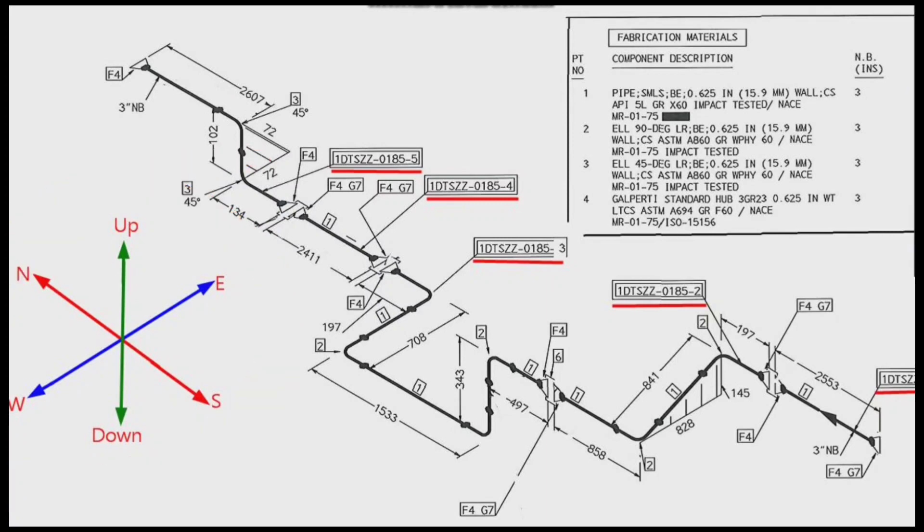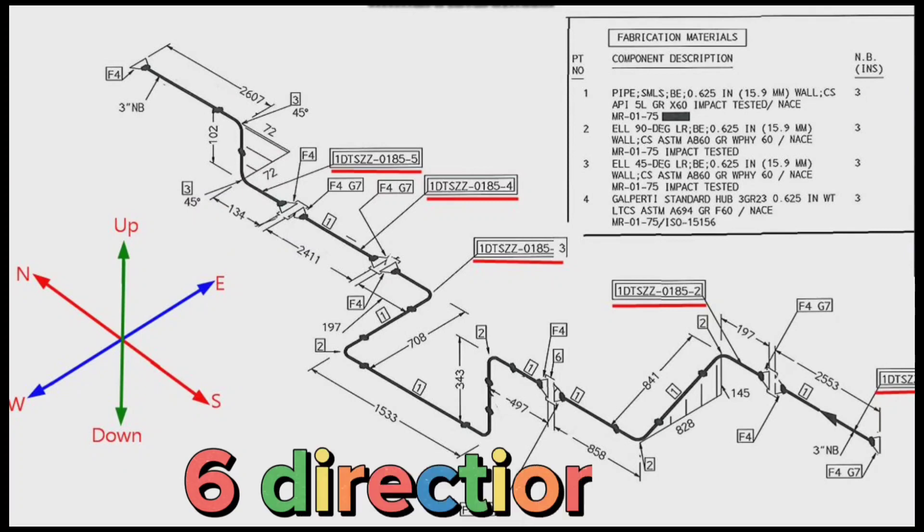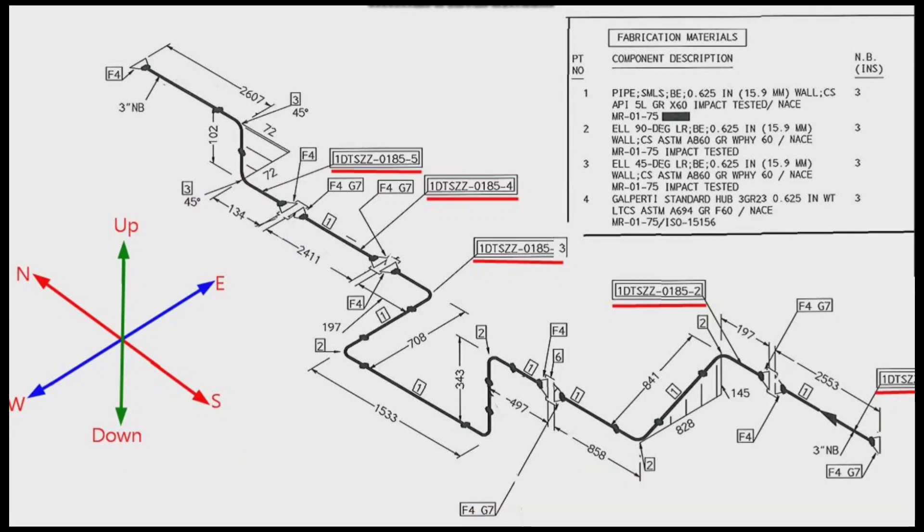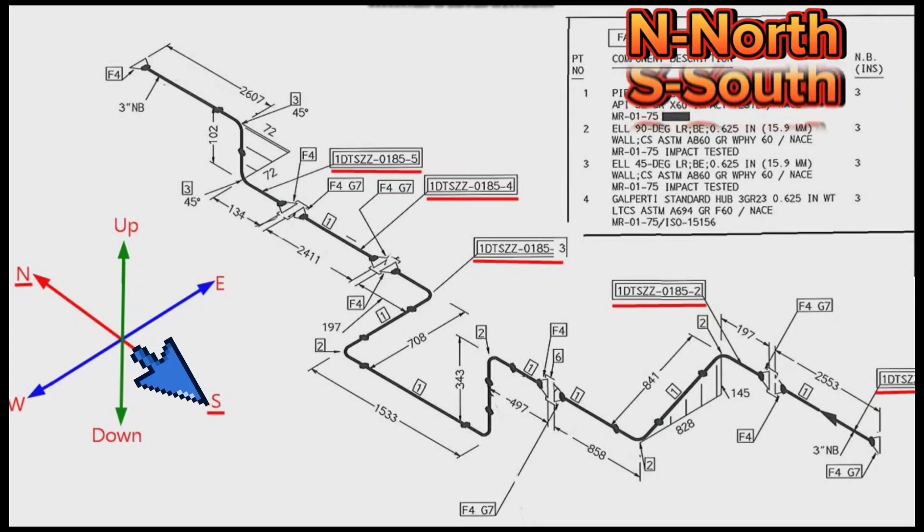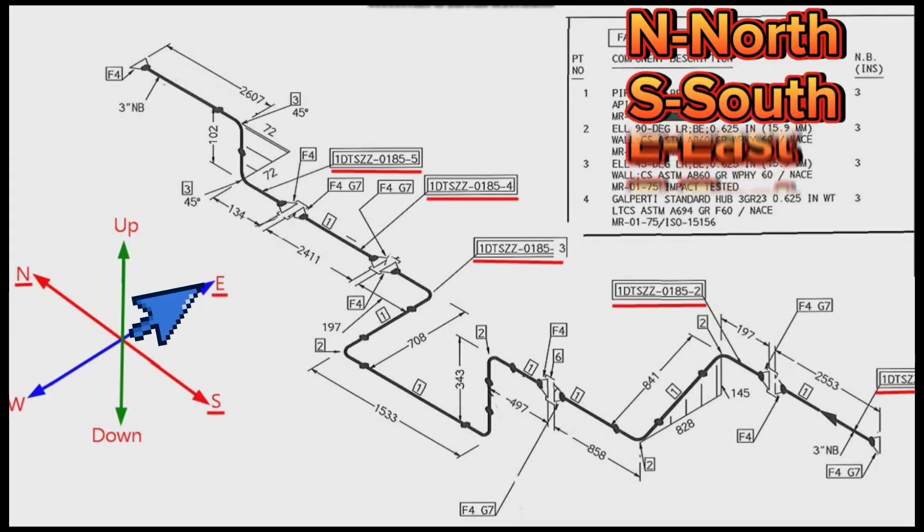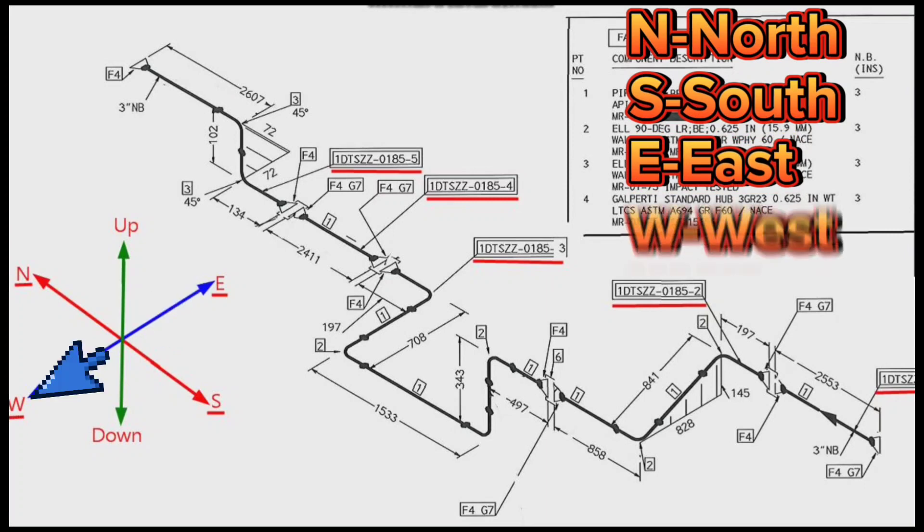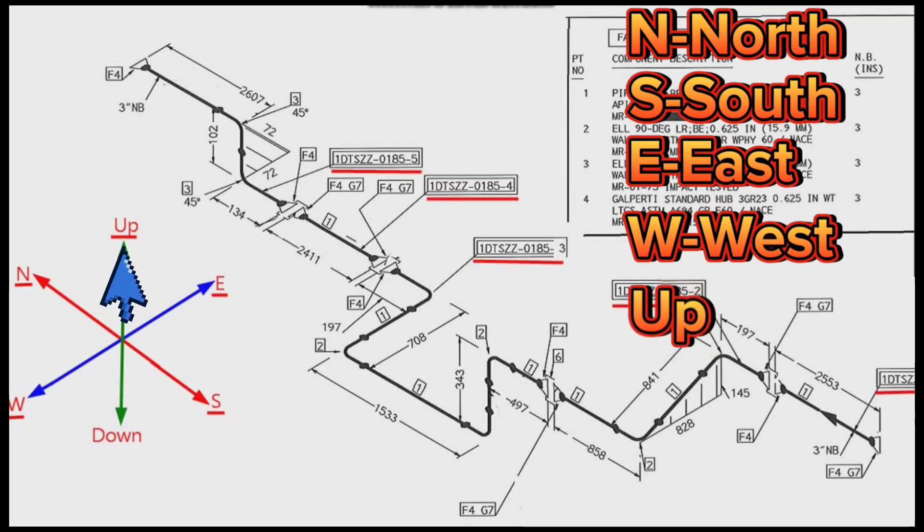There are six directions here. N means north, S means south, E means east, W means west, Up means up, Down means down directions.